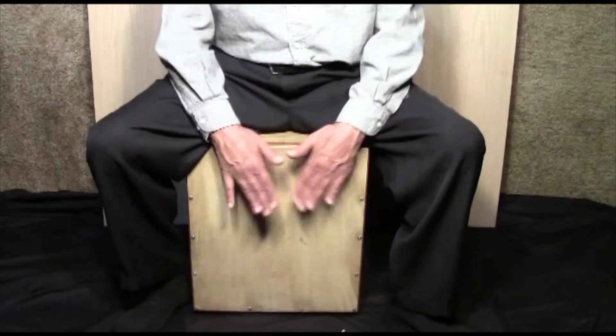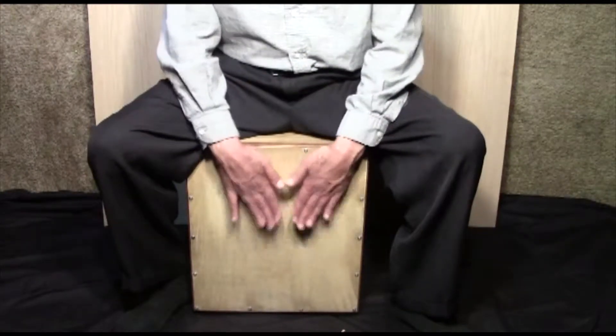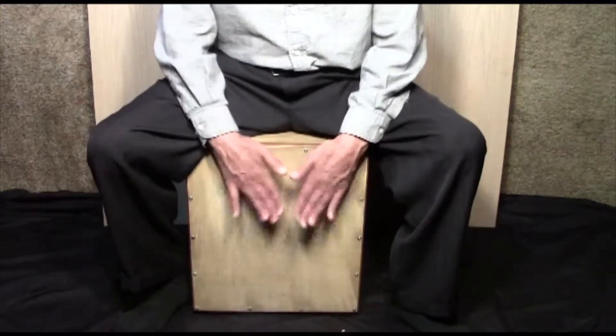Different areas of the cajon face when struck give off a regulated amount of rattle that can vary according to where the player plays on the face.